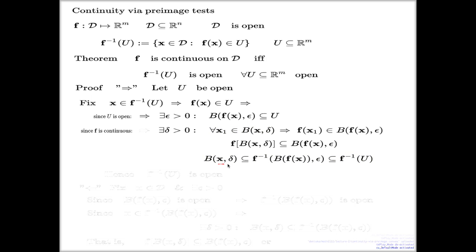That the ball around x, delta radius, belongs to the preimage of this epsilon ball, which is even smaller than the preimage of U. And that's the end of it.